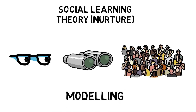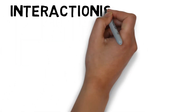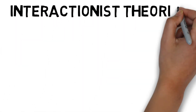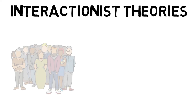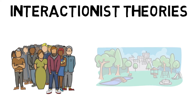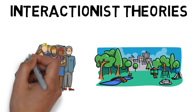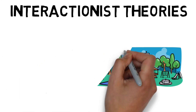Interactionist theories are a mix of social learning and trait aspects. They argue that we are born with certain characteristics which interact with the environment. So personality is seen as a relevant predictor of behavior in some, but not all, situations.